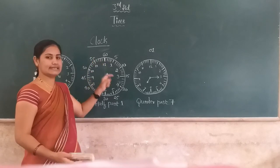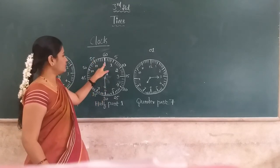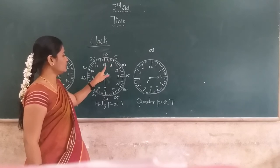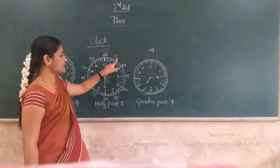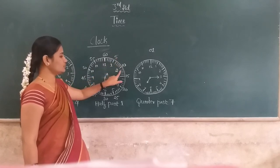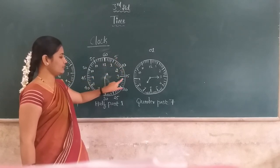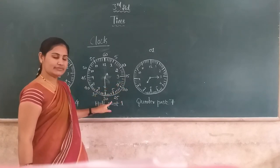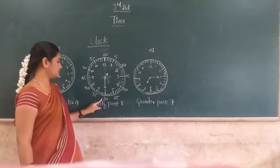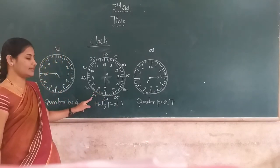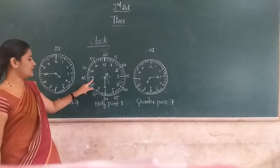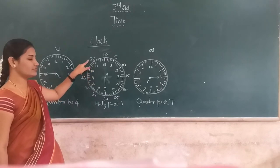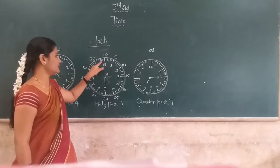One short line indicates one minute. From 12 to 1 we call it 5 minutes. 2 is 10 minutes, 3 is 15 minutes, 4 is 20 minutes, 5 is 25 minutes, 6 is 30 minutes, 7 is 35 minutes, 8 is 40 minutes, 9 is 45 minutes, 10 is 50 minutes, 11 is 55 minutes, 12 is 60 minutes.